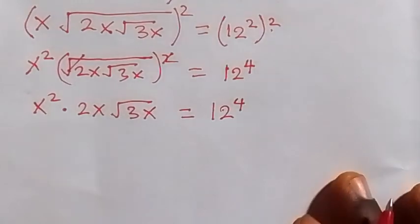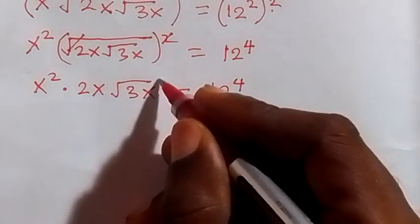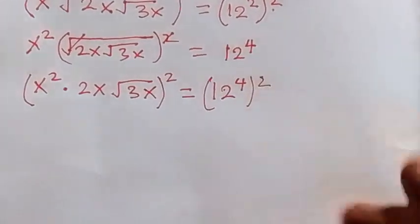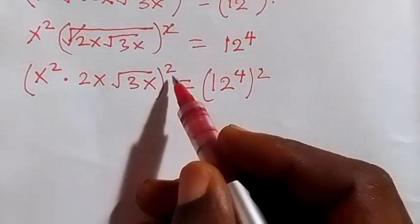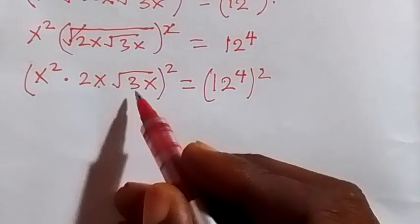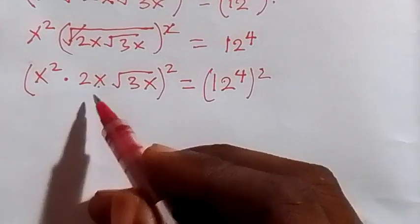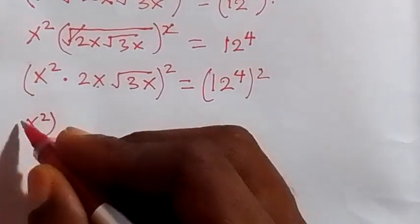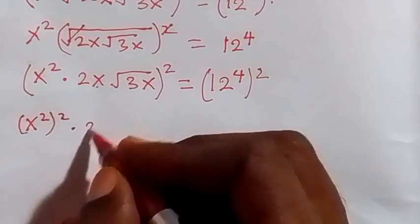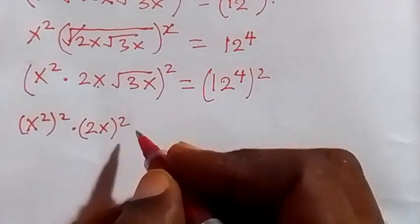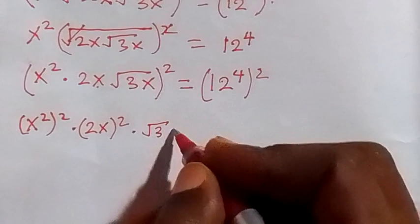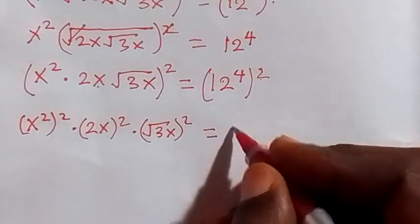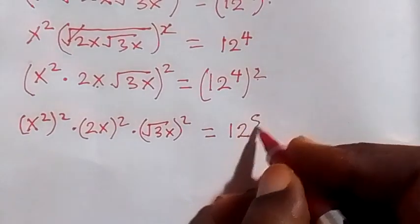We repeat the process and square both sides again. This square affects all three terms: x squared, 2x, and root 3x. So we have x squared squared times 2x times root 3x squared, which equals 12 raised to the power 8, since 2 times 4 is 8.